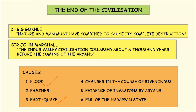Next, some historians are of the view that changes in the course of the River Indus led to the decline of the Harappan civilization. According to them, the River Indus shifted its course away from Mohenjo-daro. Previously the Indus was flowing near Mohenjo-daro, but afterward it shifted and began to flow in another direction. Because of that, water became scarce in the region, compelling the Harappan people to migrate elsewhere.